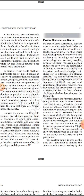Family is a group of persons directly linked by kin connections, the adult members of which assume responsibility for caring for children. Kinship ties are connections between individuals established either through marriage or through lines of descent that connect blood relatives. Marriage can be defined as a socially acknowledged and approved sexual union between two individuals. In our next class we will talk about family in detail, so till then take care of yourself.